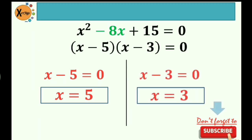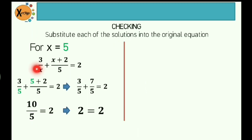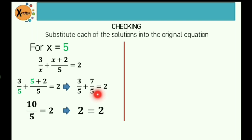Let's do the checking. For x equal to 5, write the original equation: 3 over x plus x plus 2 all over 5 is equal to 2. Substitute the value for x with 5: that would be 3 over 5 plus 5 plus 2 all over 5 is equal to 2. Copy 3 fifths; the sum of 5 and 2 is 7, over 5, is equal to 2. Since both fractions are similar, we just add the numerators: 3 plus 7 is 10, over 5. So 10 divided by 5 is 2. Therefore, 2 is equal to 2 — this is a solution.